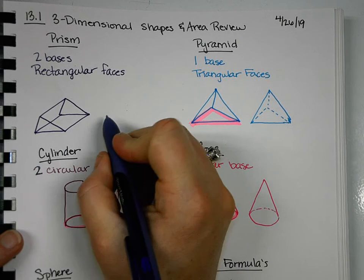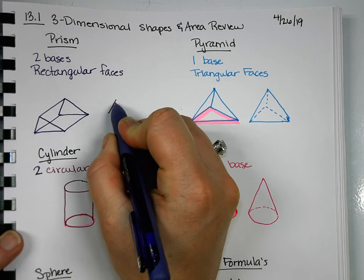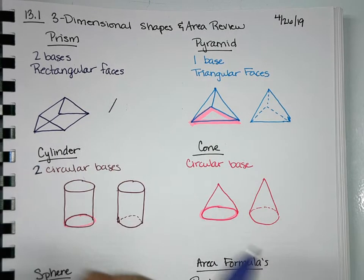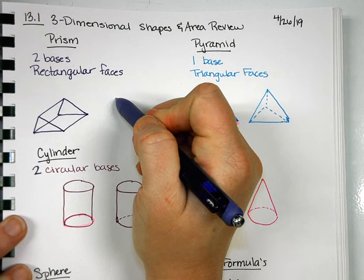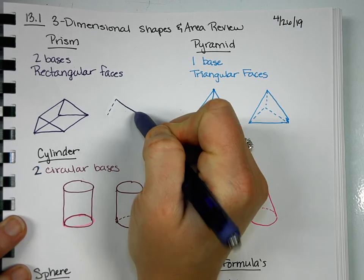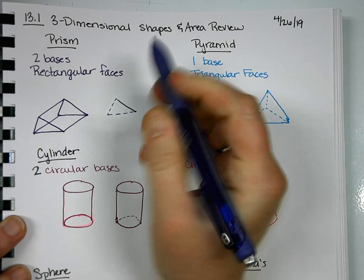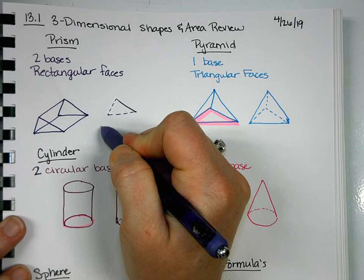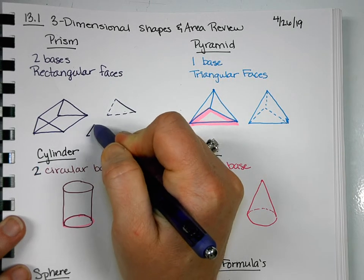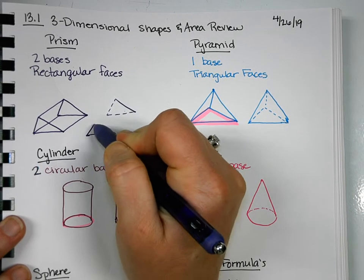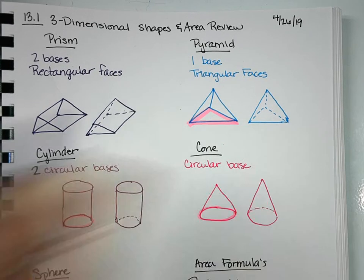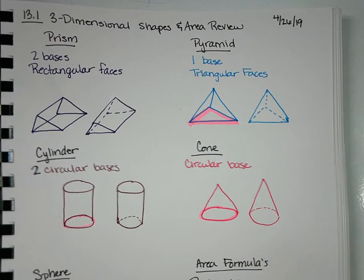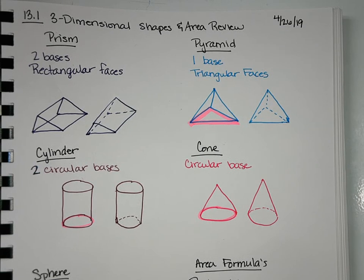And so again, if you like to do the dotted three-dimensional thing, you, whoops, I already screwed it up. We would do dotted, solid, dotted. This one would be solid completely. We'd have solid, dotted, solid. And that gives you that idea of what's in front and what's in back. Again, you don't have to do that.